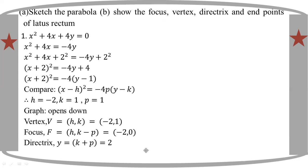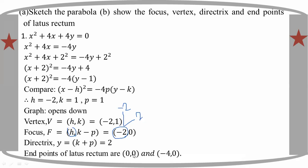The endpoints of the latus rectum are equal to (h plus 2p) and (h minus 2p). Since 2p equals 2, then minus 2 plus 2 equals 0 and minus 2 minus 2 equals minus 4. So the endpoints of the latus rectum are (minus 4, 0) and (0, 0).